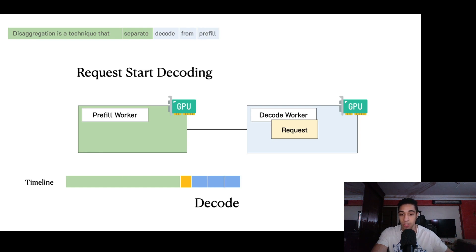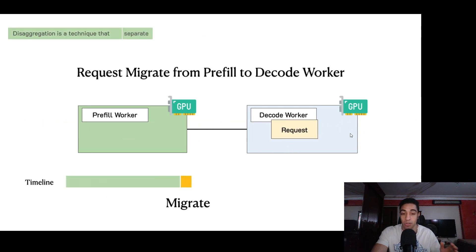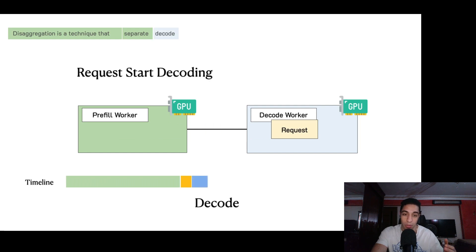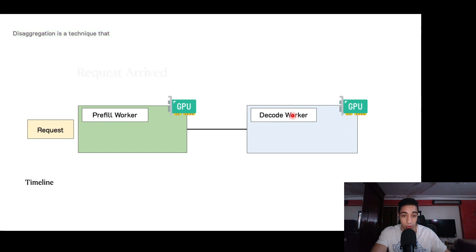You just compute the KV cache or the activations in parallel, but to generate output tokens you have to do them sequentially one by one. Most of the optimizations that we're going to cover tackle how we can make the decode phase more efficient.